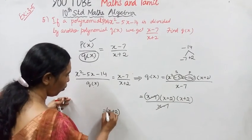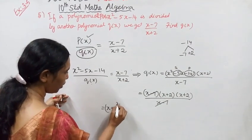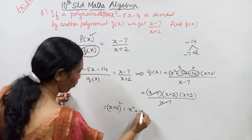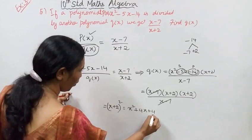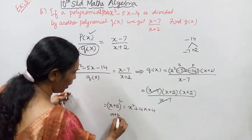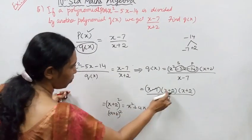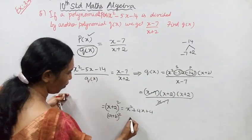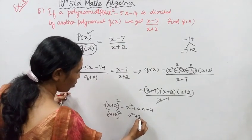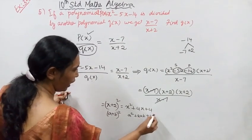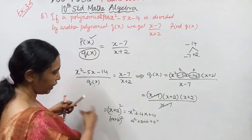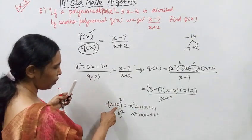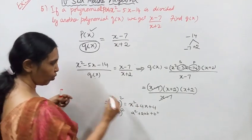X plus 2 the whole square. Using the identity (a plus b) whole square equals a squared plus 2ab plus b squared: (X plus 2) squared equals X squared plus 4X plus 4.